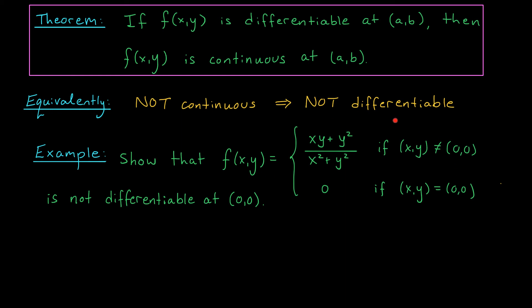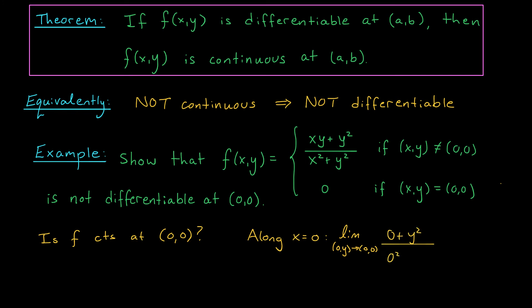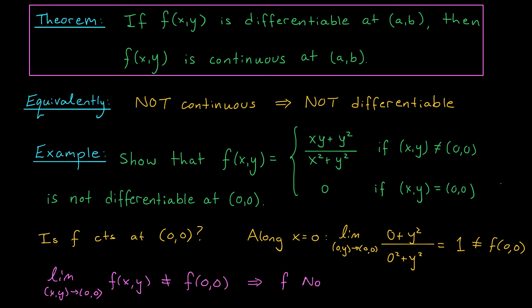For example, let's try to show that this function f of x, y is not differentiable at the origin. To do this, we're first going to look at continuity. We'll check this by looking at its behavior along various paths to (0, 0). Take the line x equals 0. Following this path to the origin, we're computing the limit as (0, y) goes to (0, 0) of 0 plus y squared divided by 0 squared plus y squared, which is exactly 1. Right away, I can see it's not going to be equal to the value of my function at the origin, f of (0, 0). So the limit as (x, y) approaches the origin is not going to equal f of (0, 0), which is what it means for the function to be continuous. We conclude that our function is not continuous at the origin, and therefore it's not differentiable there.